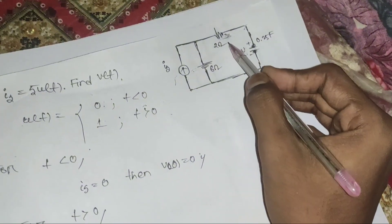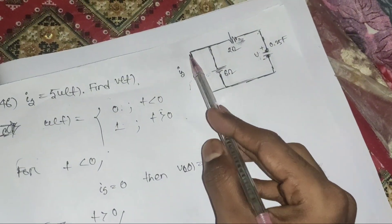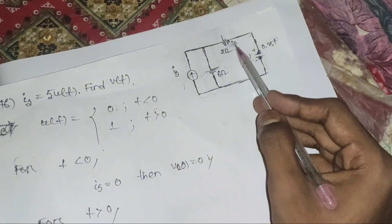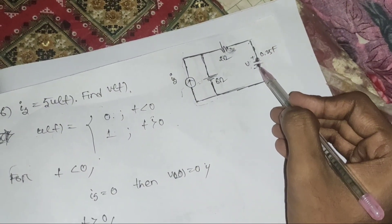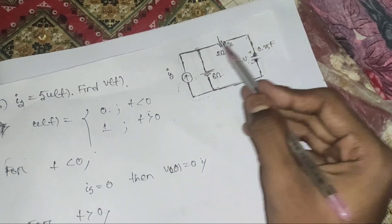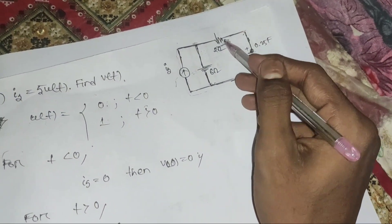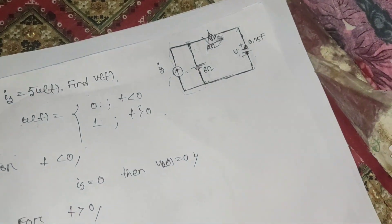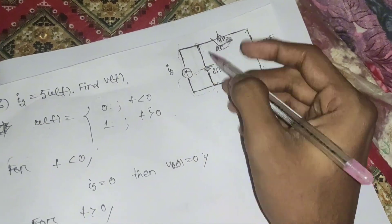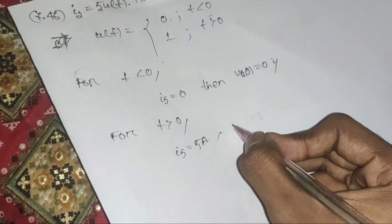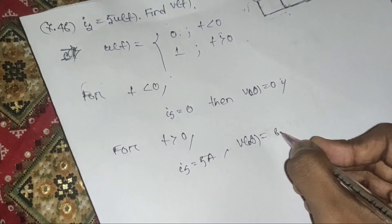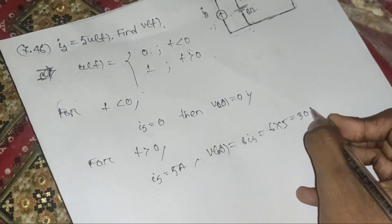With the capacitor replaced as an open circuit, there will be no current flow through the 2Ω resistor, so all current passes through the main loop. The voltage across the capacitor equals the voltage across the 6Ω resistor. Therefore v∞ = 6 × 5 = 30 volts.